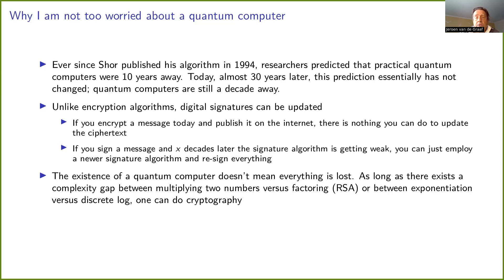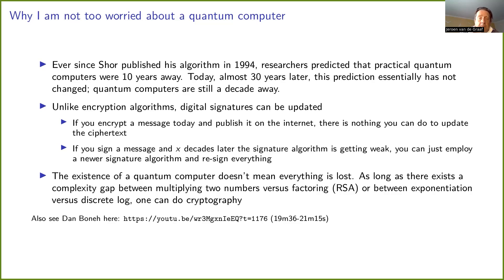One can also argue that the existence of quantum computers does not mean that everything is lost. As long as there is a complexity gap between multiplying two numbers versus factoring the product, or between exponentiation versus computing the discrete log, one can still do cryptography. I'm not the only skeptic — Dan Boneh and Shafi Goldwasser in a video seem to say the same thing: that quantum computers aren't really a threat. For practical computing, quantum computers aren't out there, so we are talking about probabilistic algorithms.